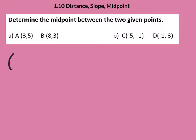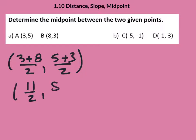So in this case, this would be three plus eight divided by two. Five plus three divided by two. This is eleven halves, eight halves. And as a decimal, this is 5.5 and four.